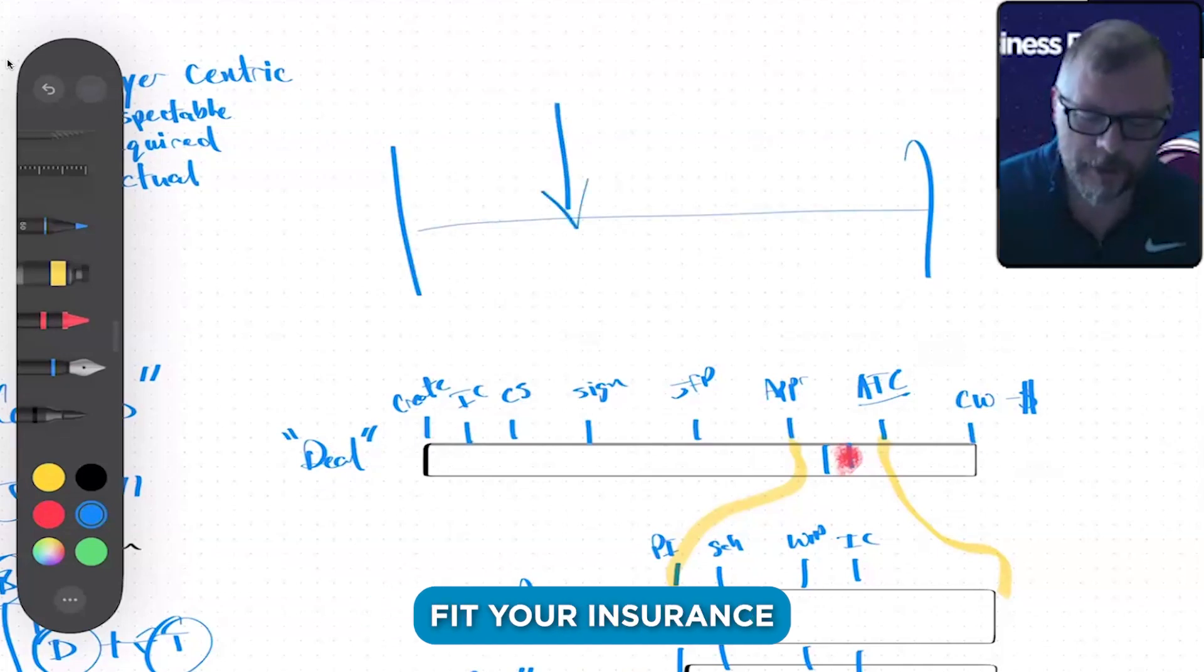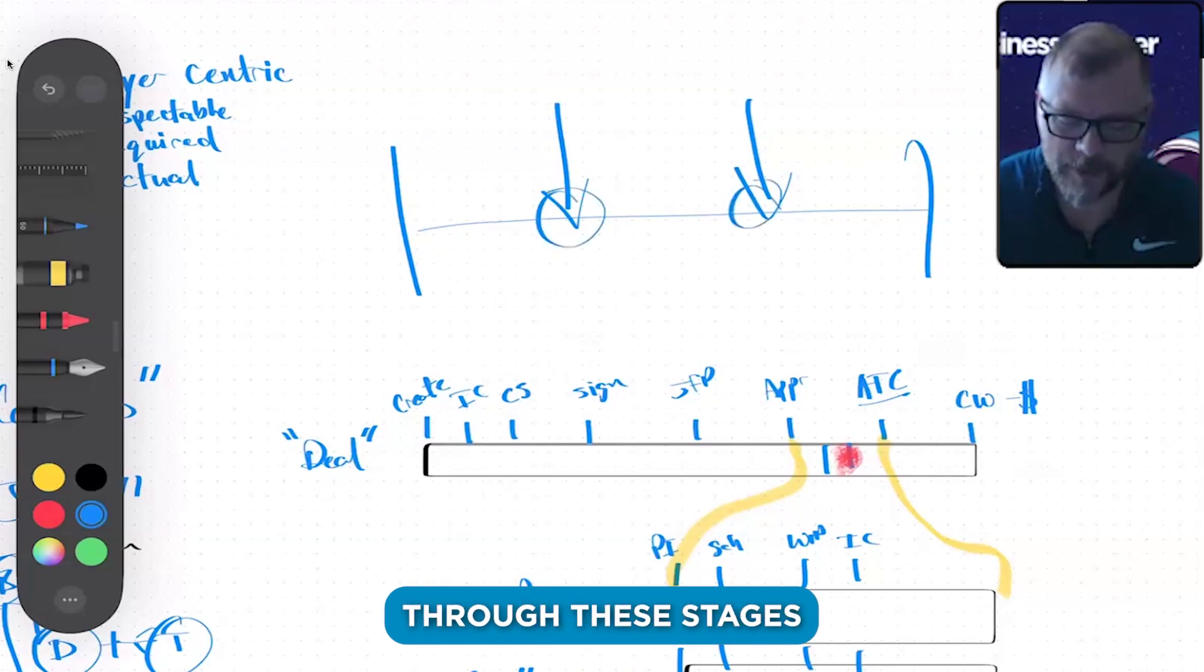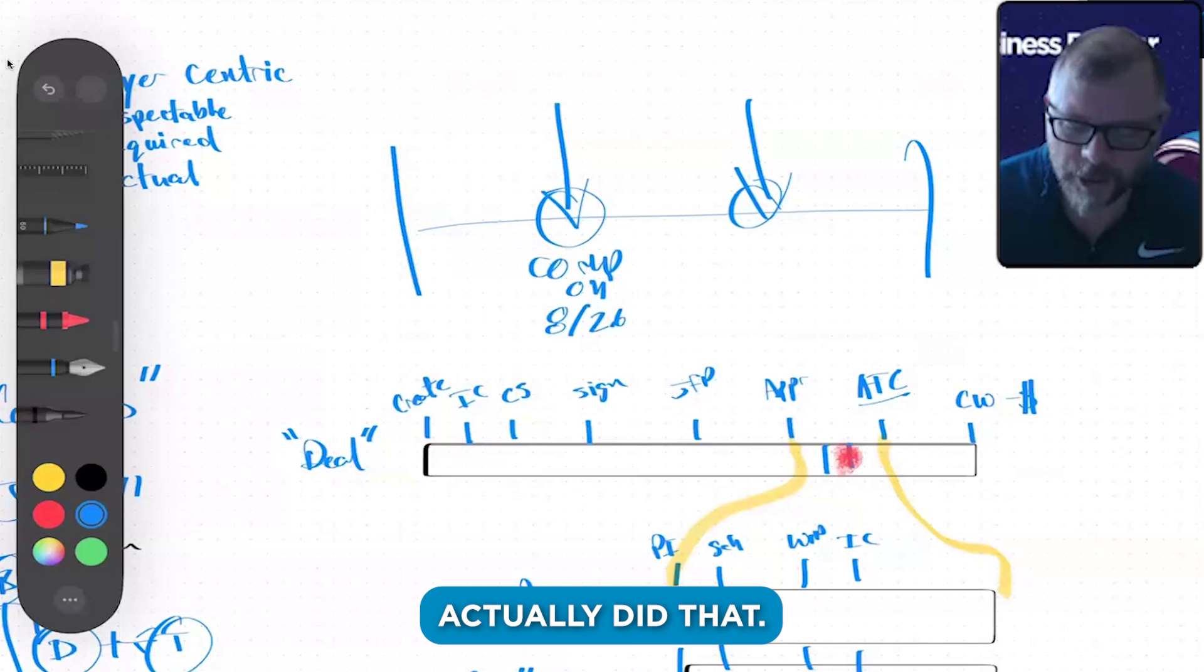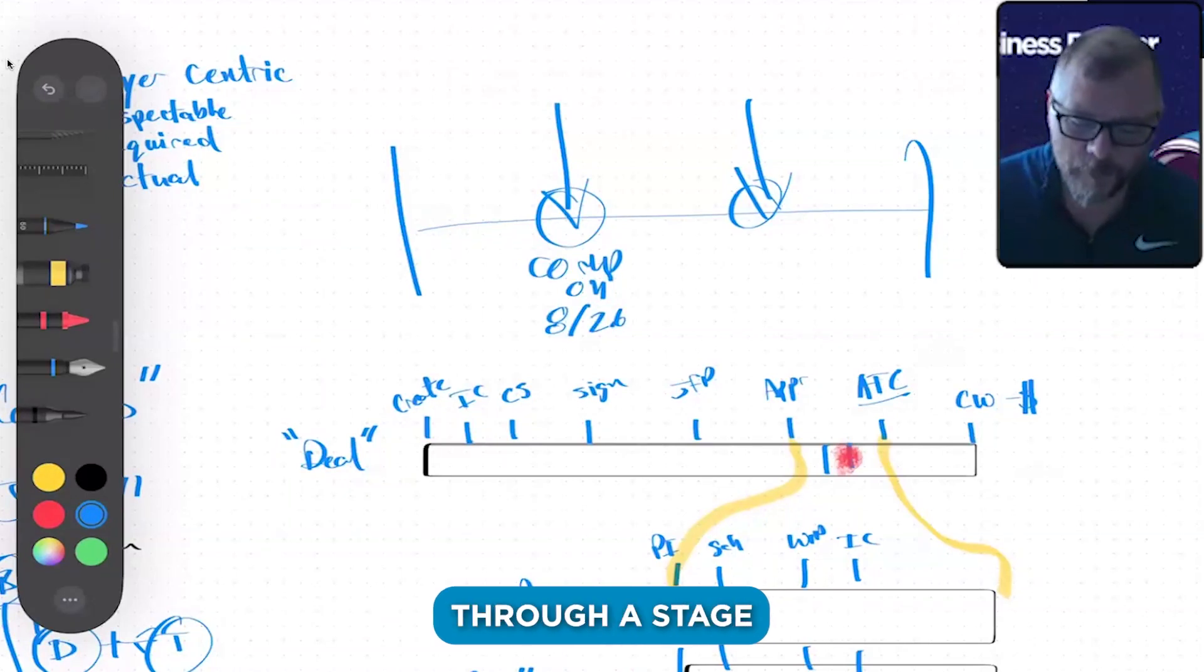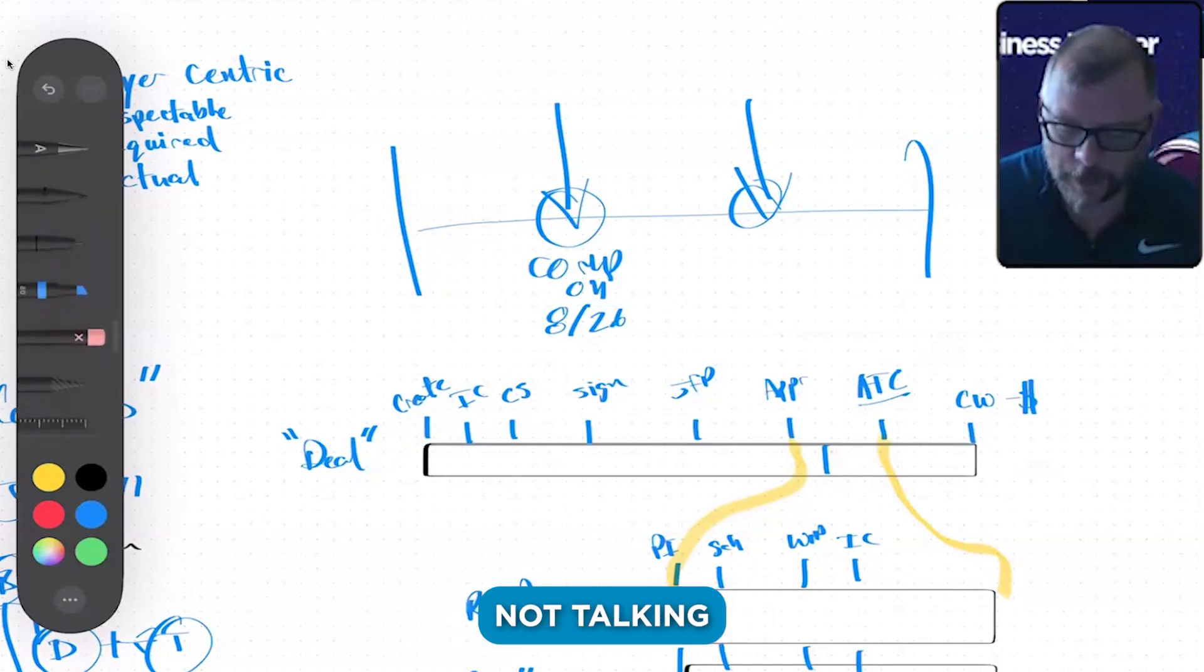You have to kind of fit your insurance claim stuff in here, and so sometimes you have to move it through these stages and it'll say completed on 8/26, but you never actually did that. So then you get bad data because it moved through a stage that never should have even existed on this deal pipeline. Not talking smack on the product, I'm just saying there's limitations to certain things.